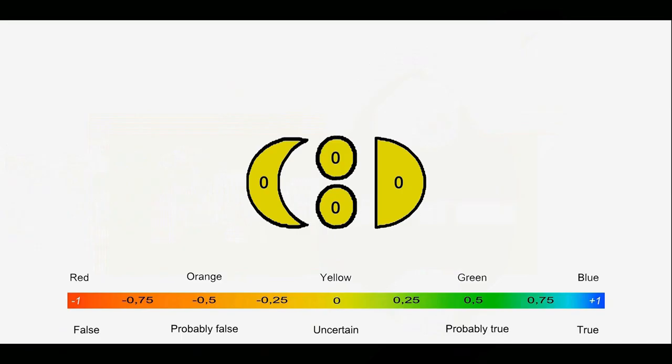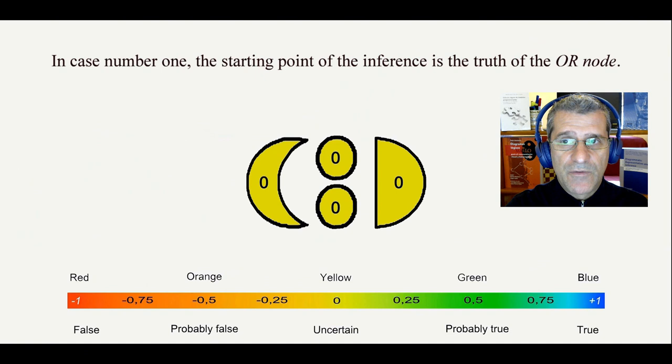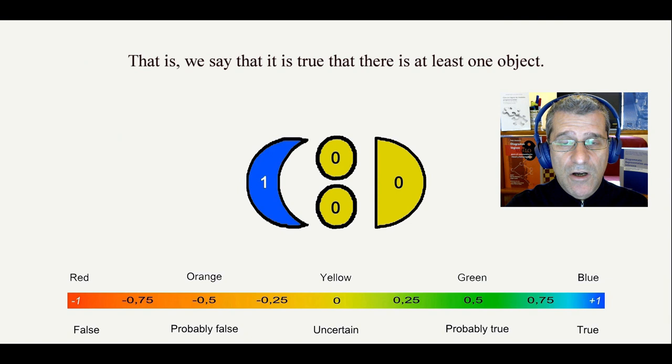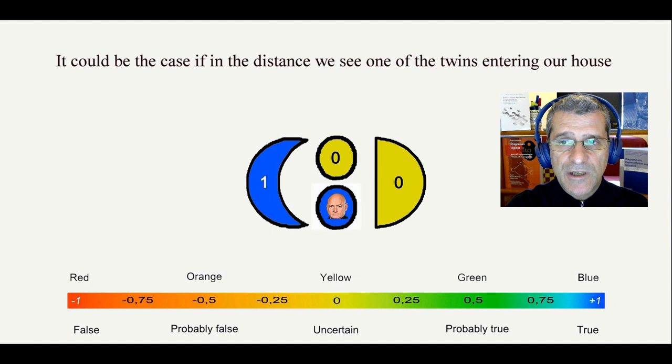In case number 1, the starting point of the inference is the truth of the OR node. That is, we say that it is true that there is at least one object. It could be the case if in the distance we see one of the twins entering our house, but without being able to say if it is Peter or John.